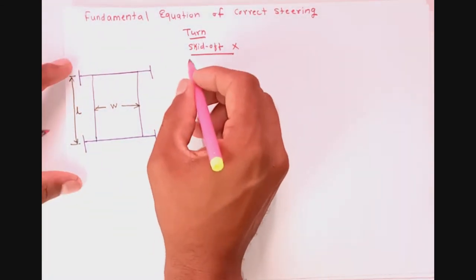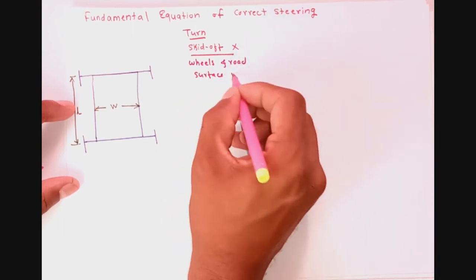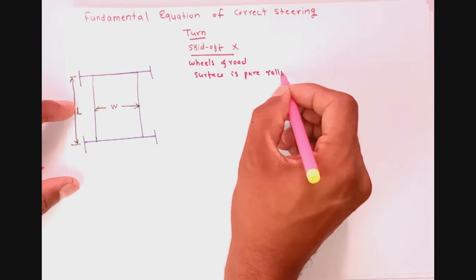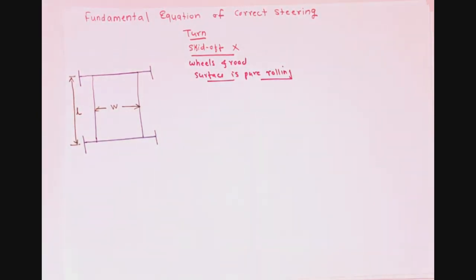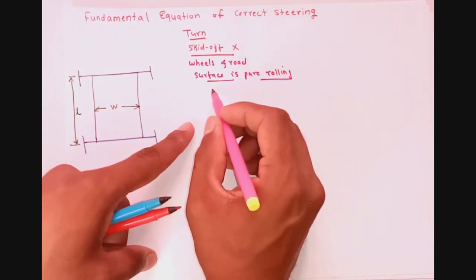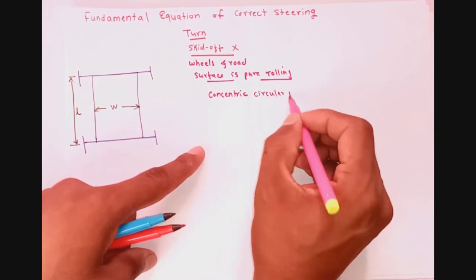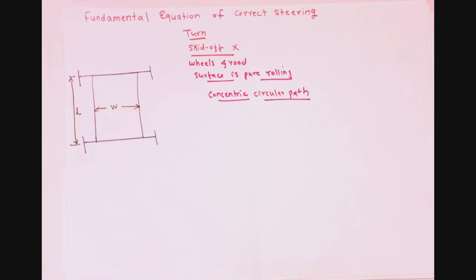This is possible only when the motion between the wheels and the road surface is that of pure rolling. So while the vehicle is taking a turn, the wheels of the vehicle should have pure rolling motion with respect to the ground surface. To ensure this pure rolling motion of all the wheels, it is expected that all the wheels should move along concentric circular paths.